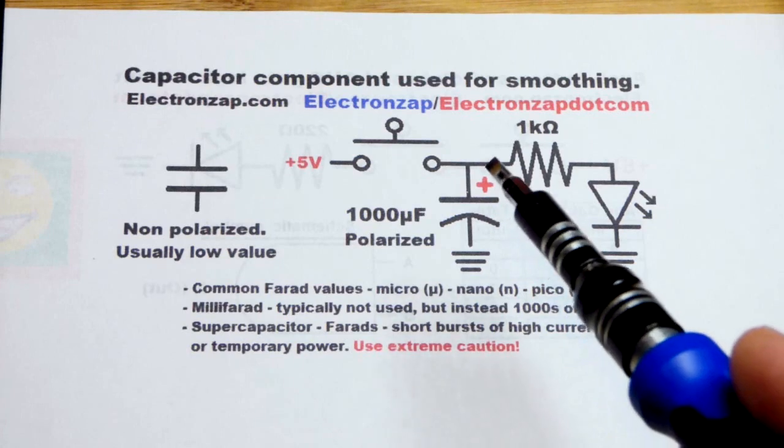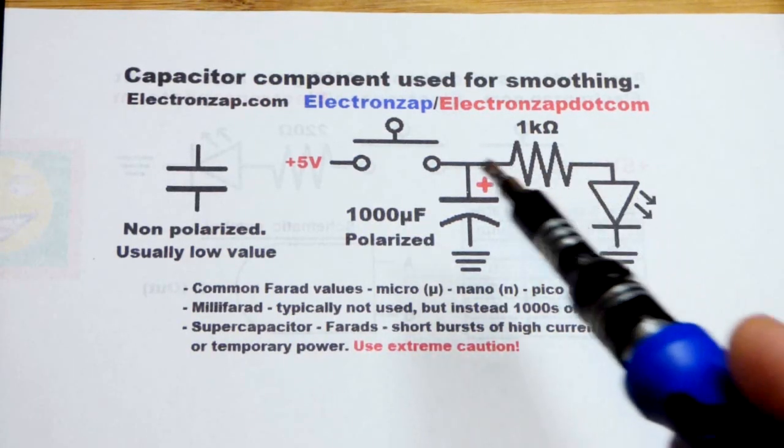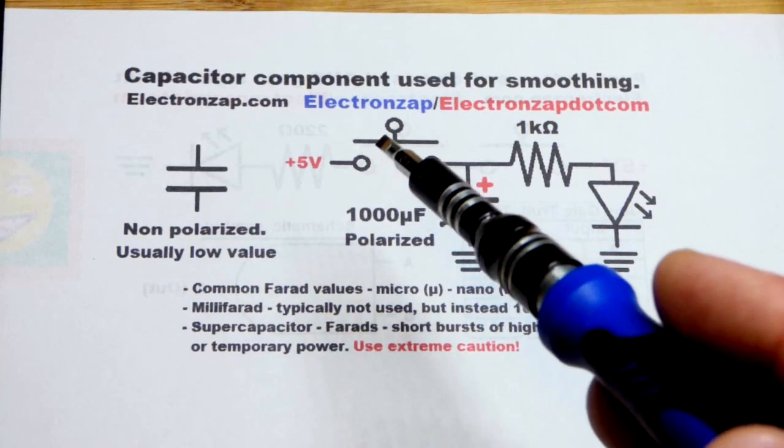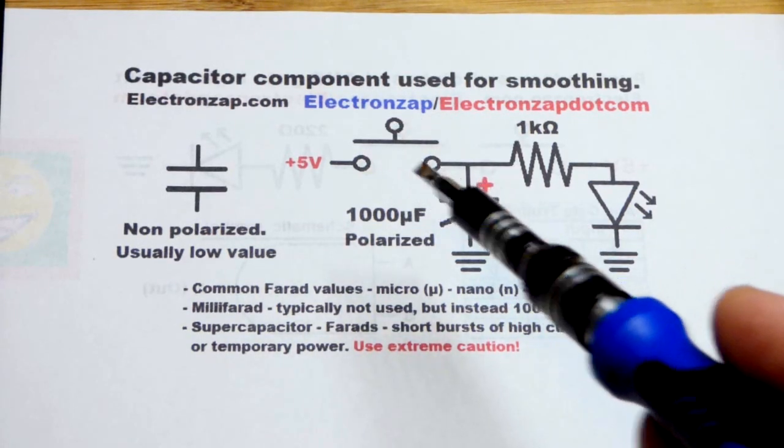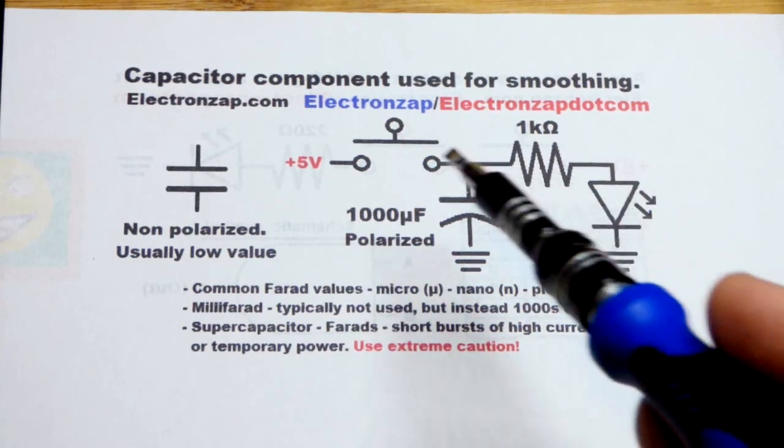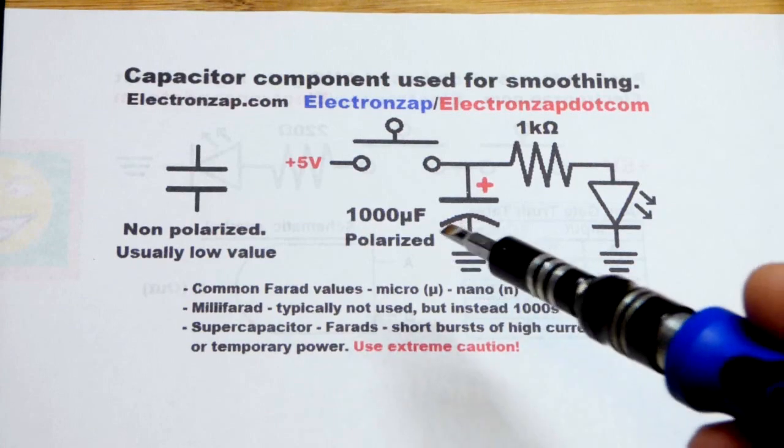It's not quite doing anything other than helping to hold the voltage at that point. If we briefly lose pushing down the switch, just briefly, the LED won't go completely out as it would if there was no capacitor there. So it stores up charge.